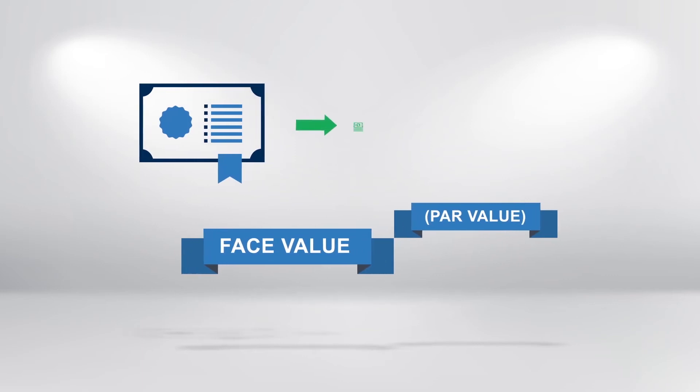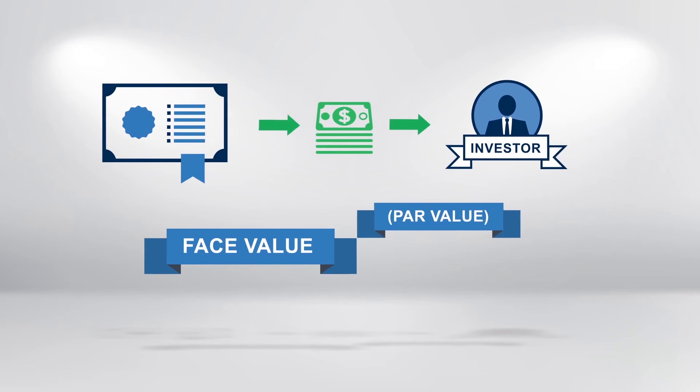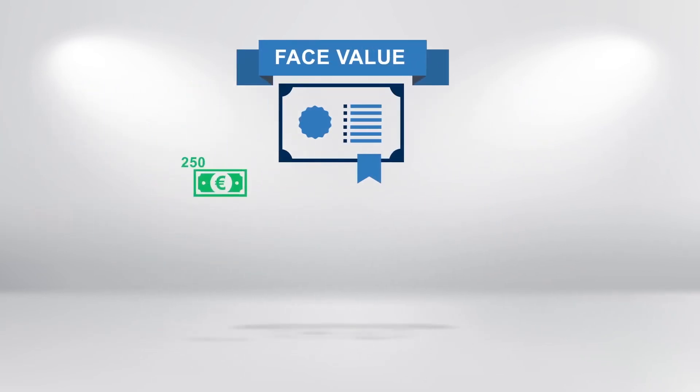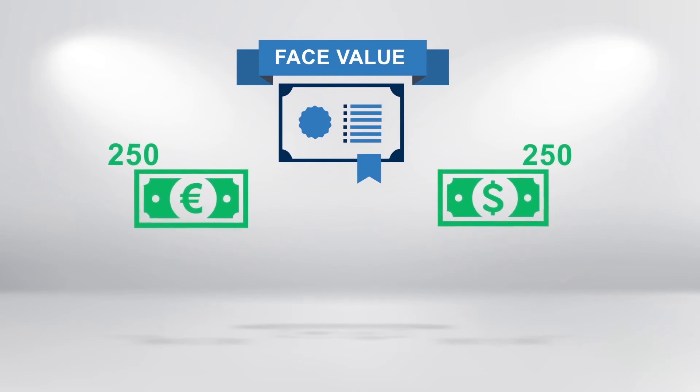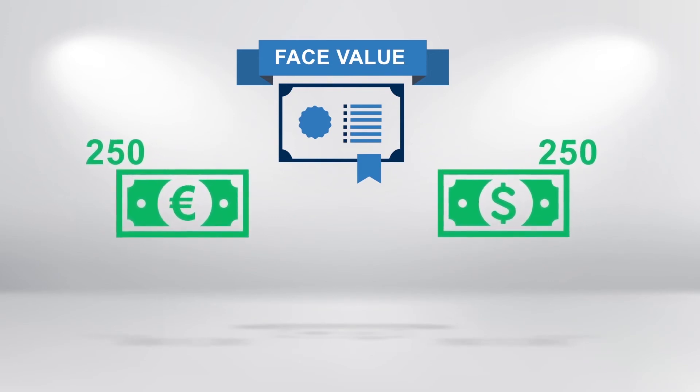The bond principle is also referred to as the face value or par value. It's the amount that the investor will get back when the bond matures. Typically bonds are issued with a minimum total principal amount of 250 million euros or dollars.